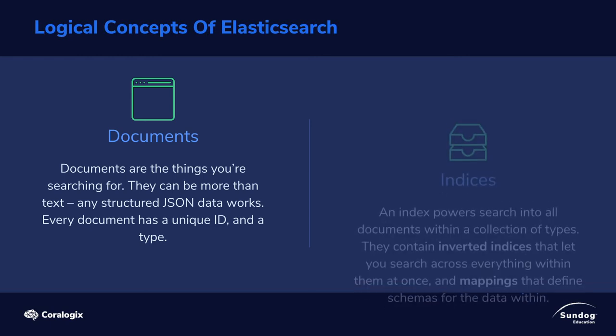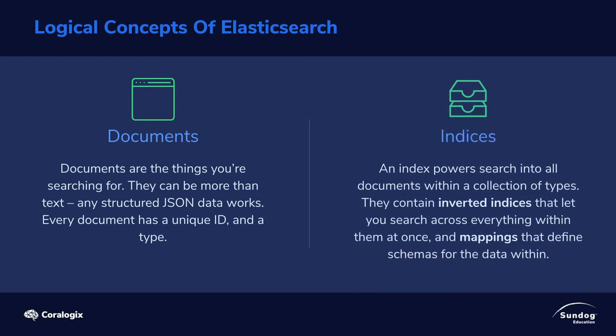The second concept is the index. An index is the highest level entity that you can query against in Elasticsearch, and it can contain a collection of documents. Bringing this back to the database analogy, you can think of an index as a database table and a document as a row in that table. The schema that defines the data types in your documents also belongs to the index, and you can only have one type of document within a single index.